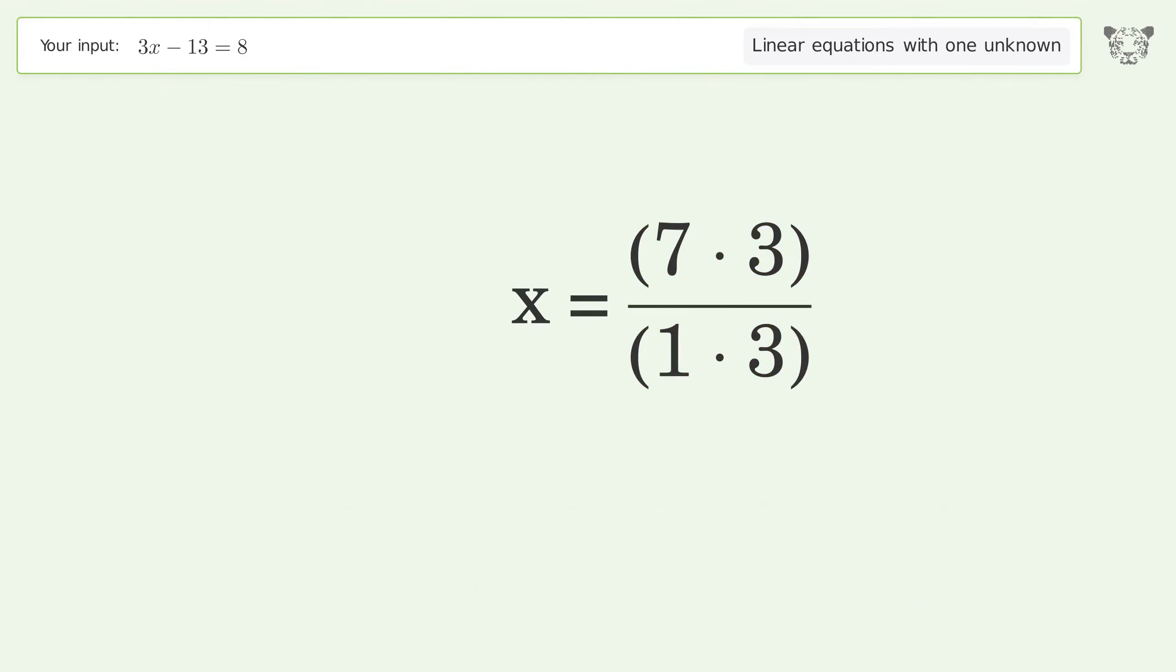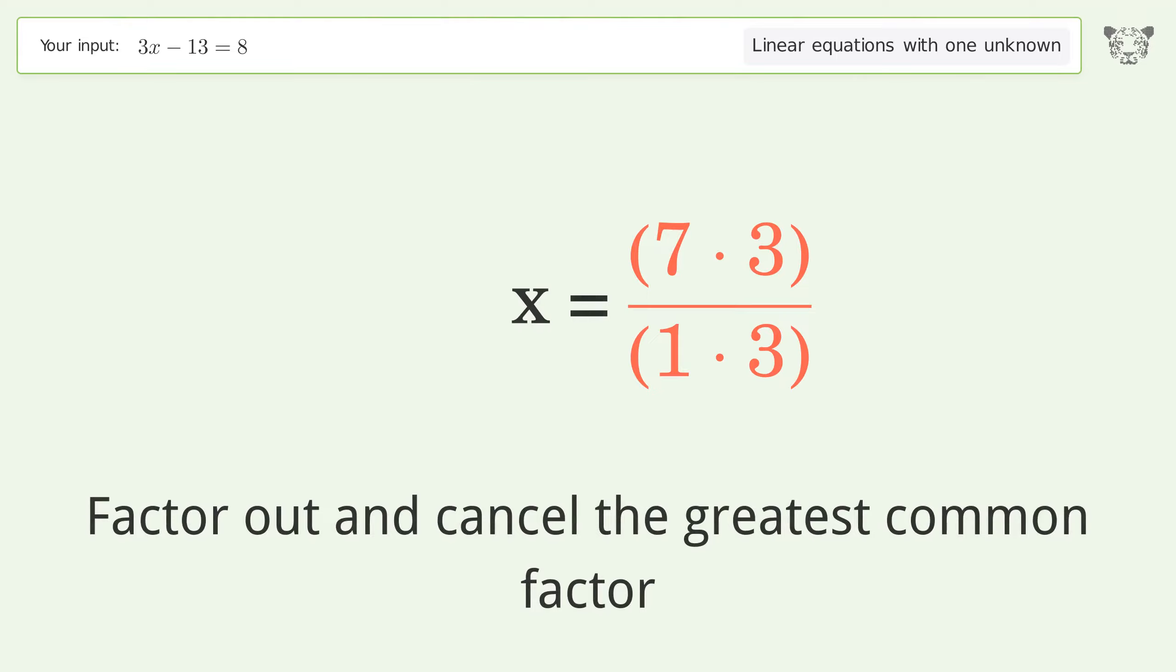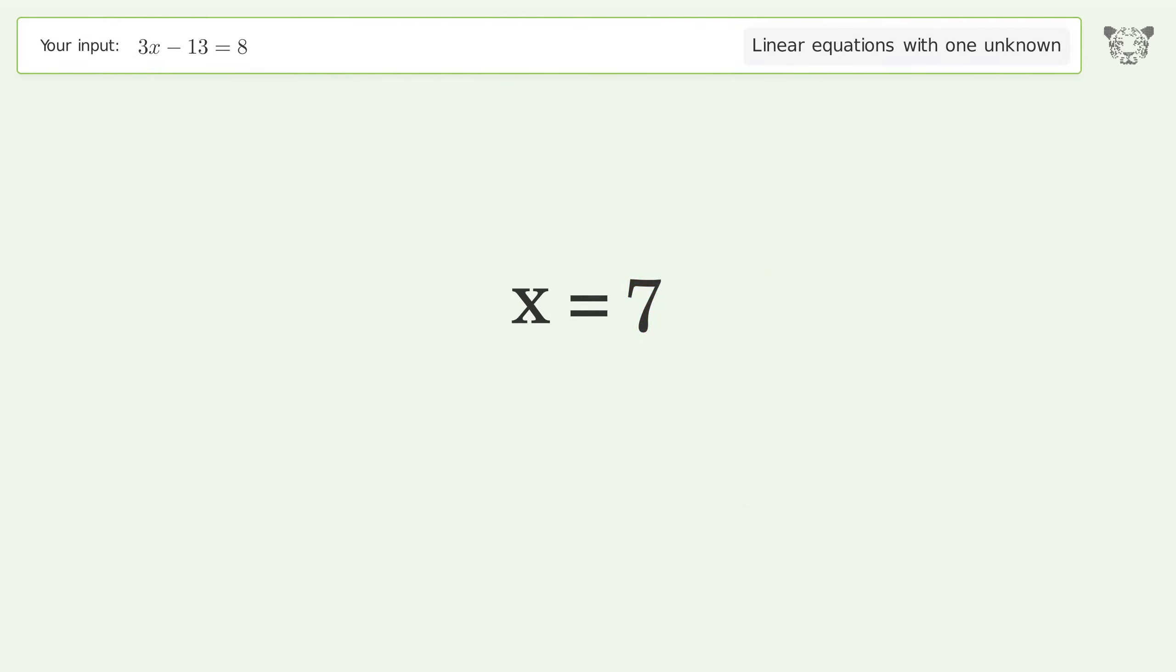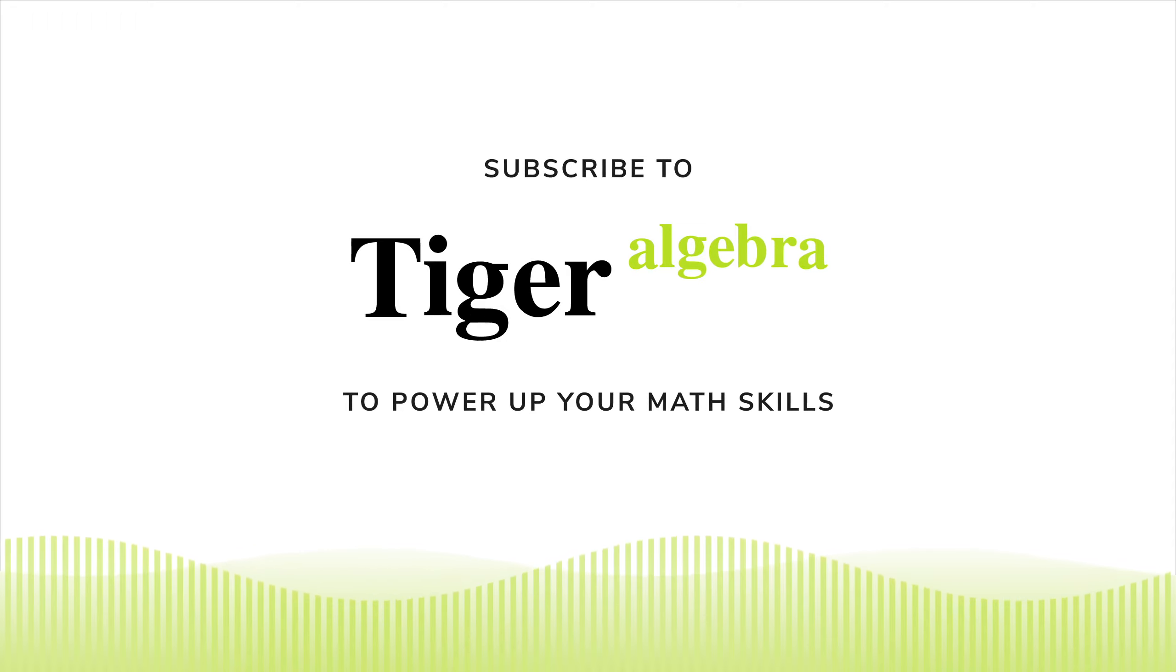Find the greatest common factor of the numerator and denominator. Factor out and cancel the greatest common factor. And so the final result is x equals 7.